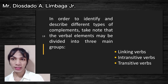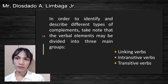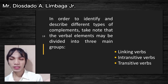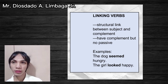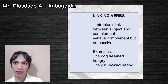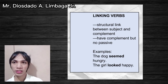To identify and describe the different types of complements, we must note that verbal elements may be divided into three main groups: linking verbs, intransitive verbs, and transitive verbs. A linking verb is a structural link between a subject and a complement — it has a complement but no passive. Example: 'The dog seemed hungry' — 'seemed' is the linking verb and 'hungry' is the complement. Another: 'The girl looked happy' — 'looked' is the linking verb and 'happy' is the complement.